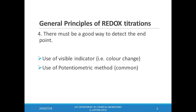Lastly, there must be a good way to detect the endpoint in a redox titration. We can use visible indicators which signal the endpoint by a distinct color change. Another method is potentiometric titration, in which we monitor the change in potential while adding the titrant to the analyte. The endpoint is found by examining visually the titration curve.